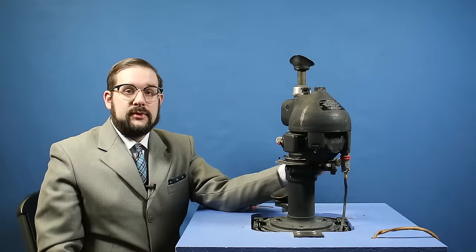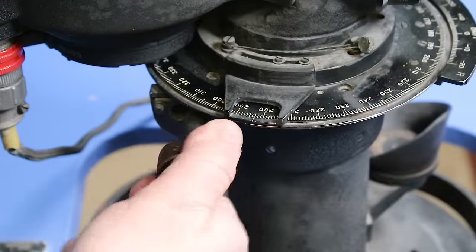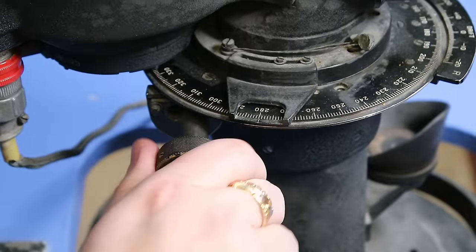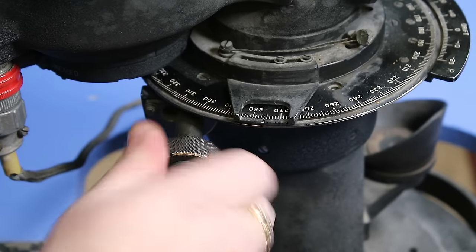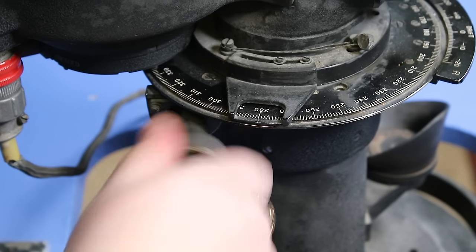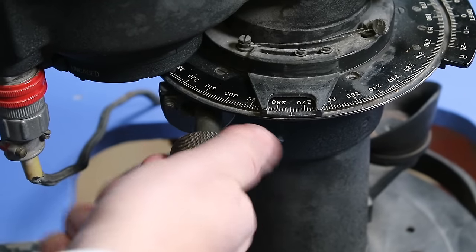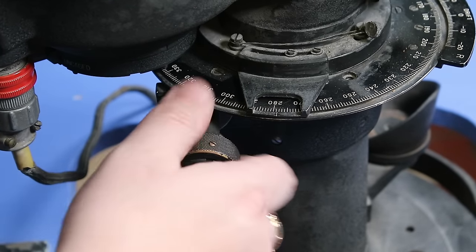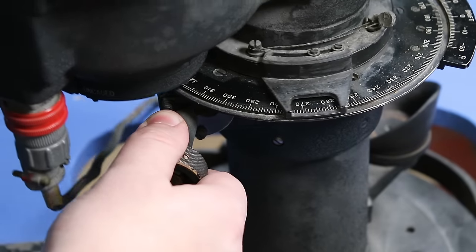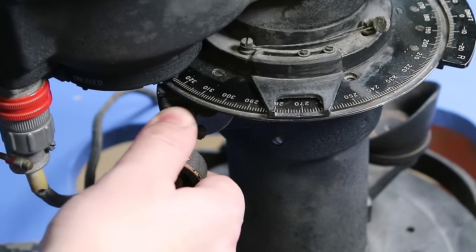To determine your drift angle you would look through the eyepiece and turn this azimuth knob until objects on the ground move parallel with the drift lines in the reticle. You would then read your drift angle off of the azimuth dial. If you want to move the azimuth dial more quickly than by turning the knob you can actually pull the knob out, pull it to the side, and now you can rotate the head freely.